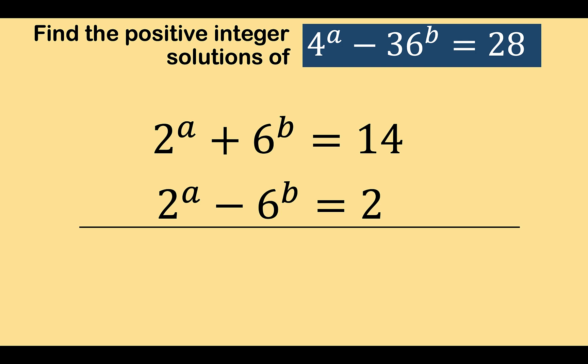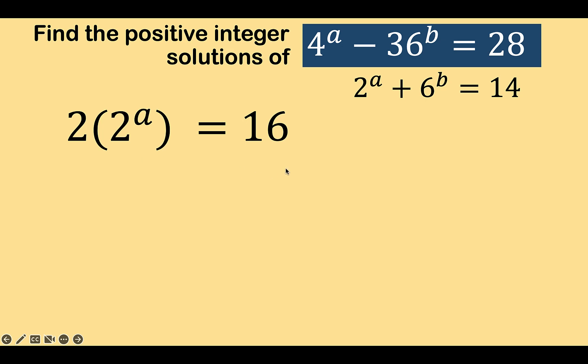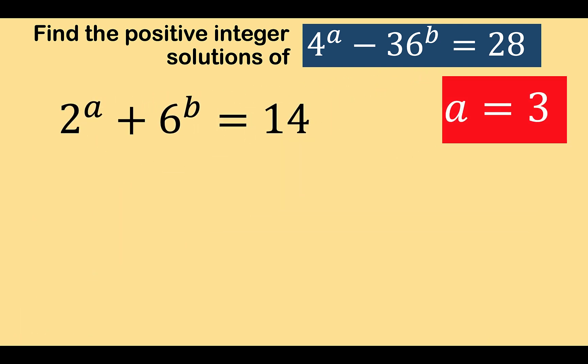This is now what we have. Adding 2 raised to a plus 2 raised to a, we have 2 times 2 raised to a. 6 raised to b minus 6 raised to b is 0. 14 plus 2 is 16. And solving now for a, we divide both sides by 2 to get 8 at the right side. And 8 can be written as 2 raised to the third. And so clearly, a is equal to positive 3, which is a positive integer solution.